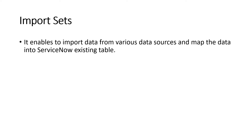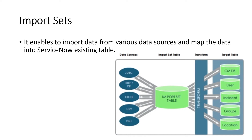This is a diagram from the ServiceNow product documentation. Data can be sourced from JDBC, HTTP, Excel, CSV, XML, or LDAP. You import it and then transform it to different target tables inside of ServiceNow. The data source is where you take the data; the target table is where you put the data inside ServiceNow.